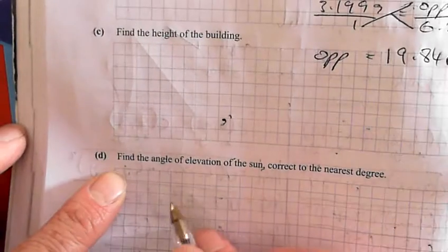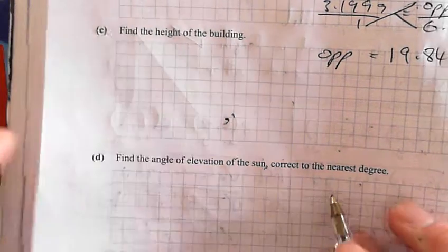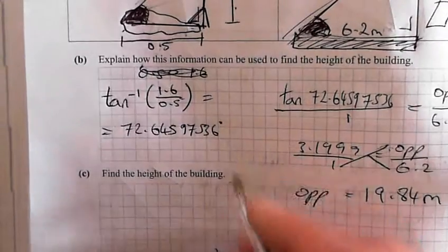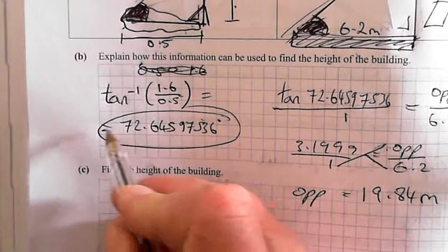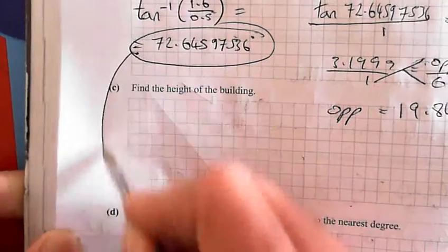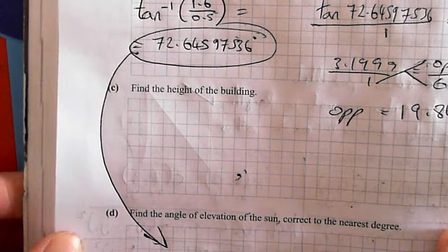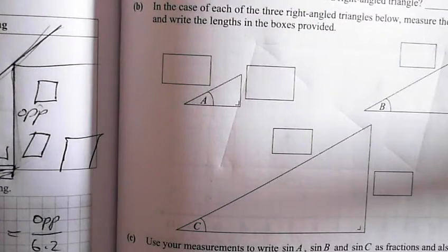Alright, the last question was find the angle of elevation of the sun, correct to the nearest degree. Well we did, we found the angle of elevation of the sun, 72.64 degrees. Alright, go on to the next one.